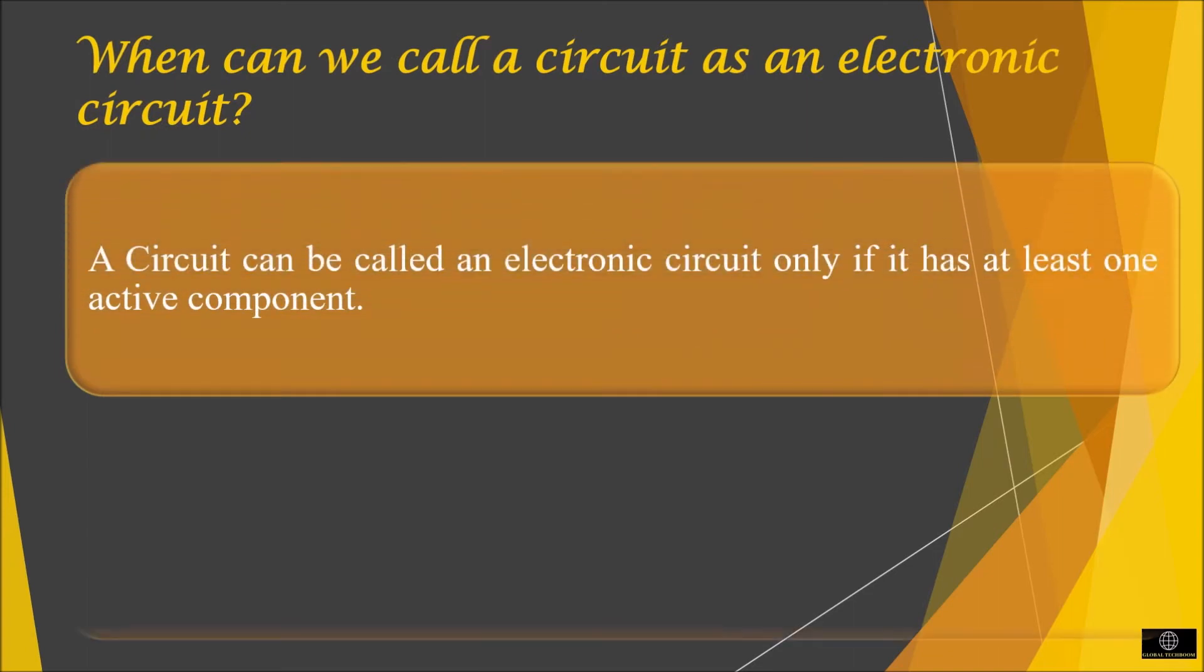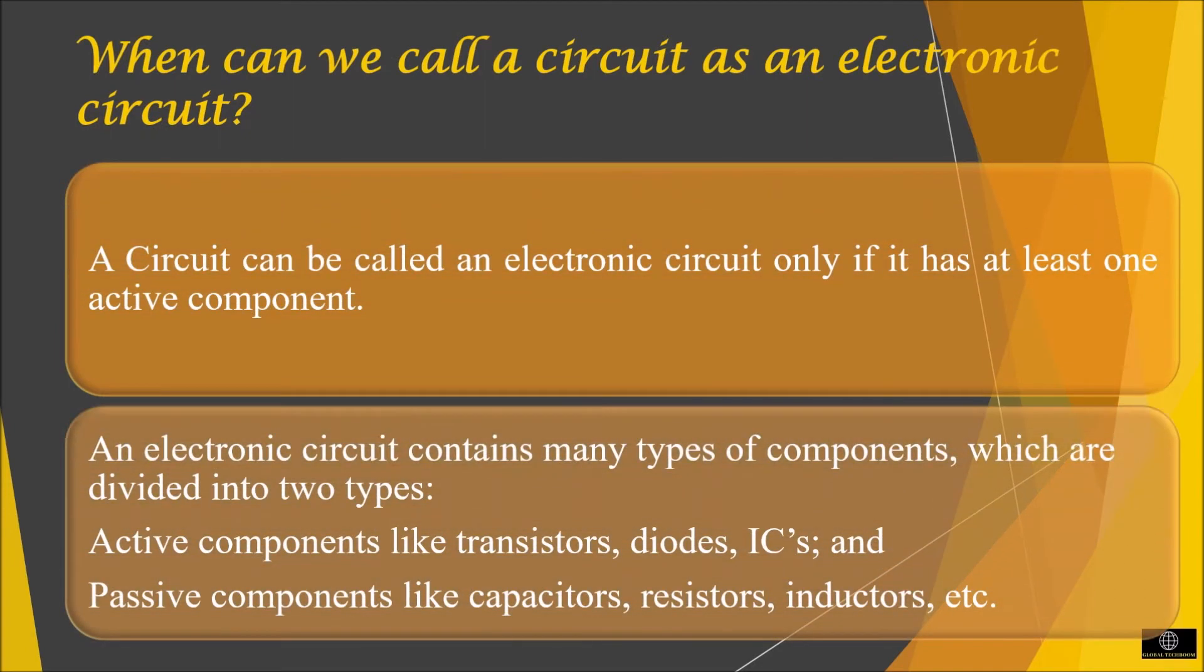So when can we call a circuit as electronic circuit? A circuit consisting of specific electronic components such as resistor, transistor, diodes, capacitor, etc. are connected by conductive wires through which electric current can flow. This is called as an electronic circuit.